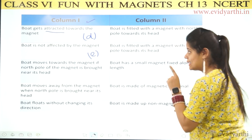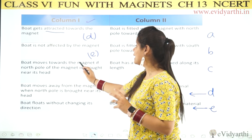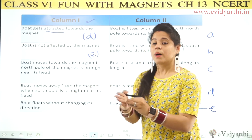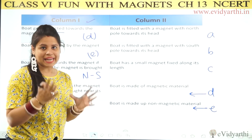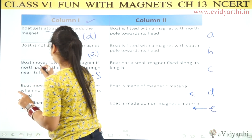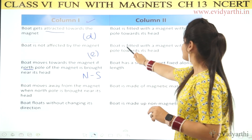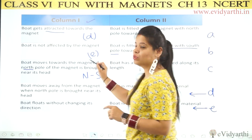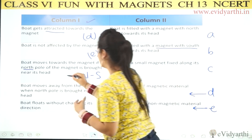Next effect: the boat moves towards the magnet when the north pole is brought near its head. If the boat moves toward the north pole, that means the boat's head has a south pole — opposite poles attract. So the boat is fitted with a magnet with its south pole towards its head. The answer is B.